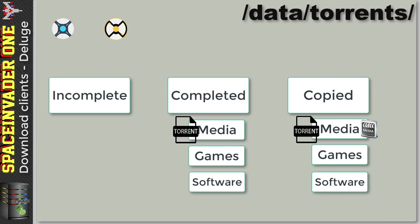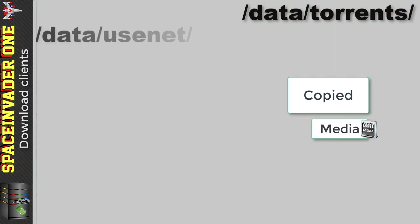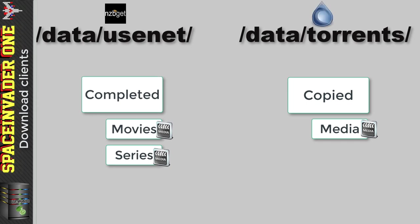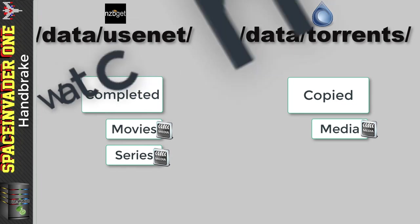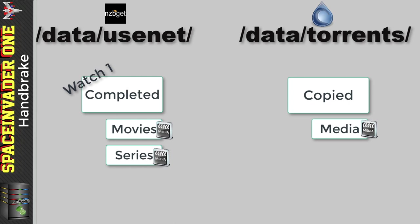By the end of the process the completed torrent is copied and extracted into copied/media, while the original stays in completed for seeding. Now for where media files will be when ready to re-encode: it's the completed folder for usenet and the copied folder for torrents that we want as Handbrake watch folders. Handbrake can have multiple watch folders — the first watches the usenet completed folder, and the second watches the torrents copied folder. Handbrake also looks through all subdirectories, so movies, series, and media subfolders are all scanned.